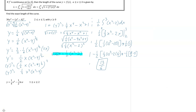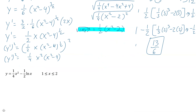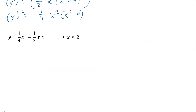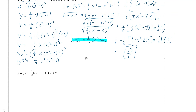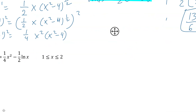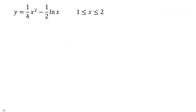Now I want to show you something that is a little bit more involved — it's going to have a few more steps to give you another example. It's a different problem with the exact same steps. First thing we're going to do is take this problem and find its derivative. So y prime equals 1/2 x minus 1 over 2x.